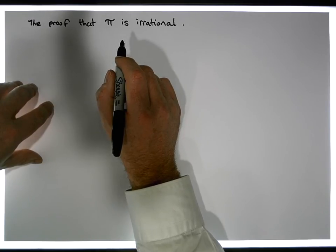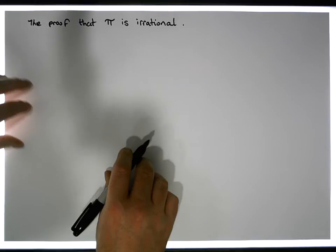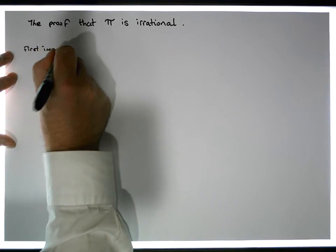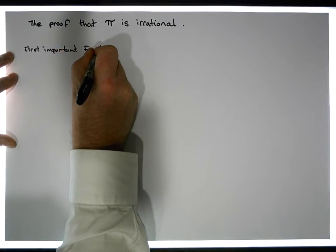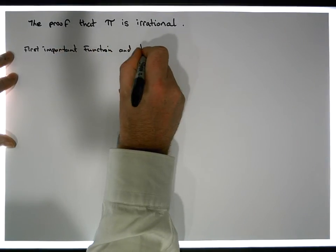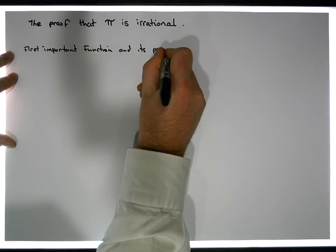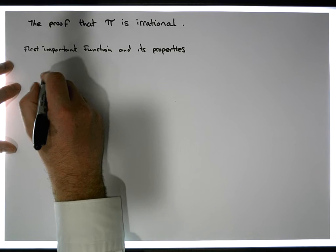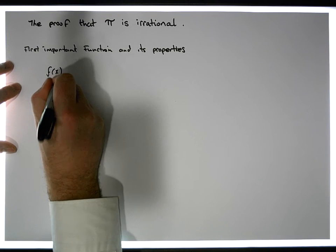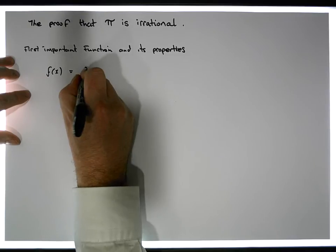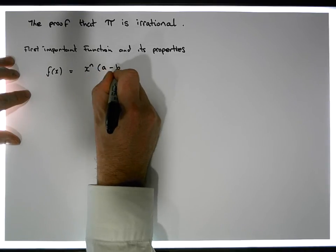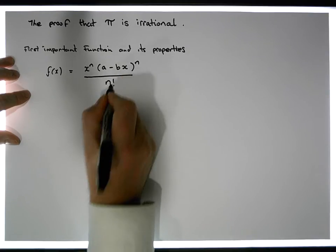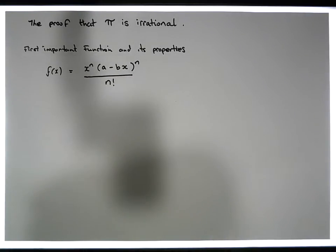So what I'm going to do is present our first important function and its properties, because this is going to be really important for us to show that pi is in fact irrational. The function looks like this: it's f of x, equal to x to the n times (a minus b times x) raised to the power of n, divided by n factorial. So it's a function in x, parameterised by x and also by n.